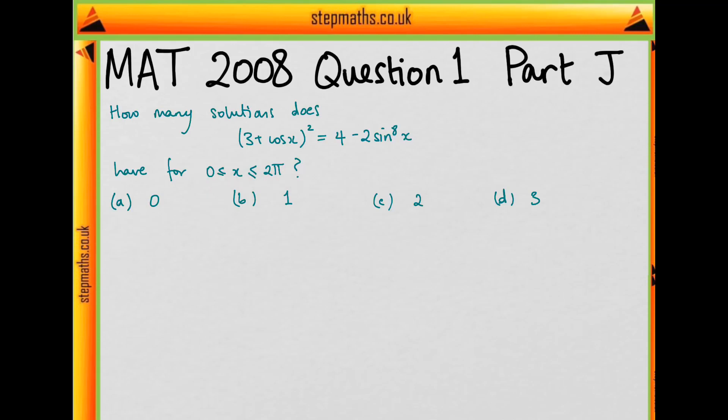What might seem obvious would be to substitute 1 - cos²x in for this sine term to get everything in terms of cosines.